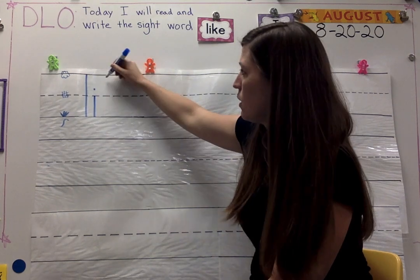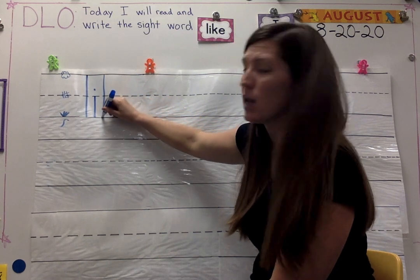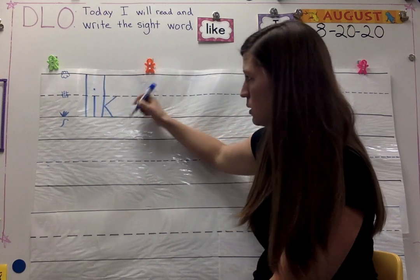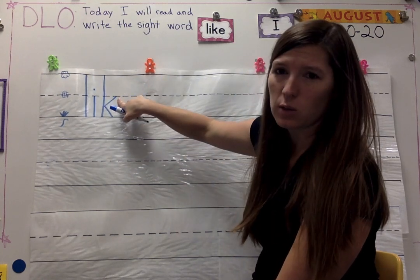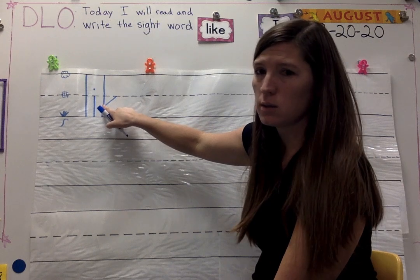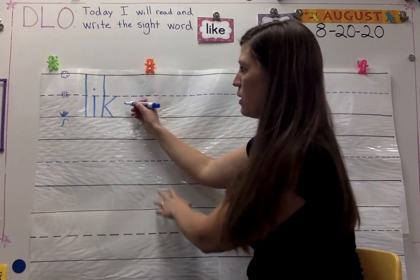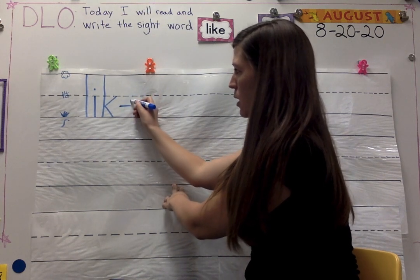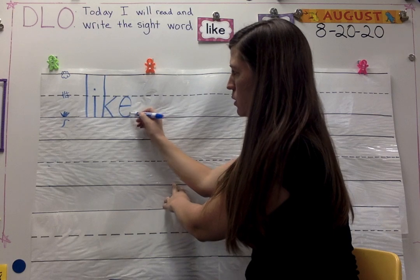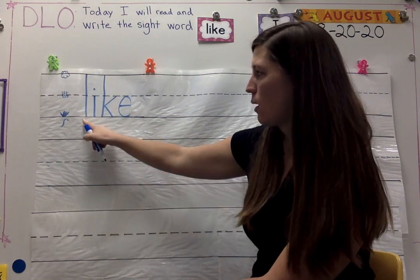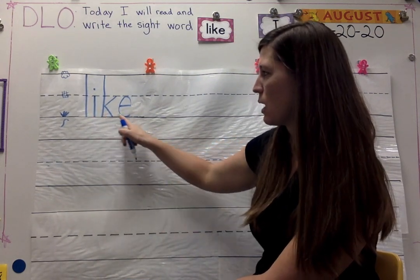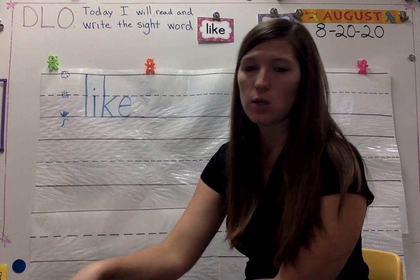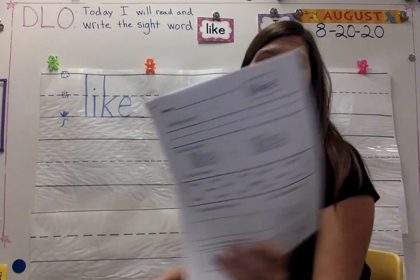K is tall — K goes down, then you jump sideways to the fence, kick in, kick out. Start at the fence so the second part is short: kick in, kick out, touch the ground. E starts right in the middle — go over, up, and around. Like. Let's spell it: L, I, K, E — like. I'm going to write it two more times because you are going to write it twice or three times in your Journeys book and then three times on the sight word page, so we'll practice two more times. L-I-K-E, like. L-I-K-E, like.